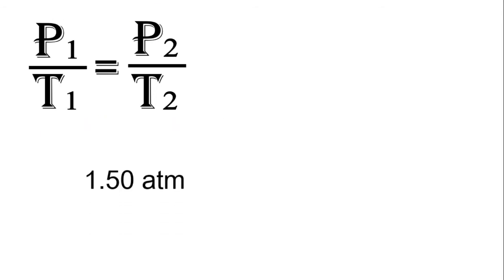Now, let's substitute the given values. P1 is equal to 1.5 atm over T1, which is equal to 303 Kelvin, equals P2, which is what we are looking for in this problem, and T2, which is equal to 273 Kelvin.